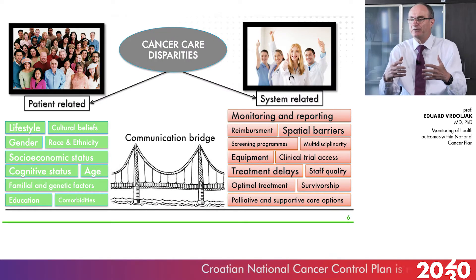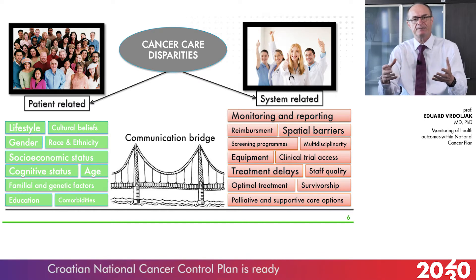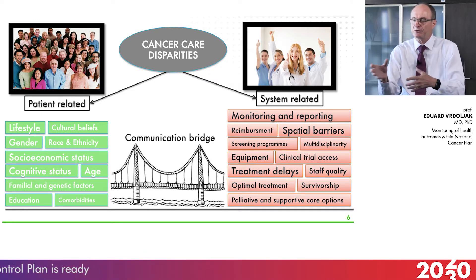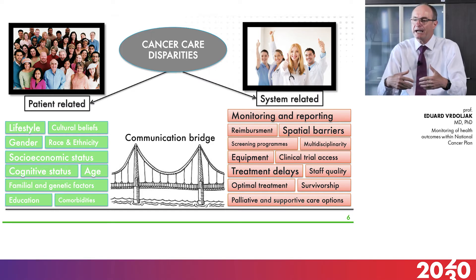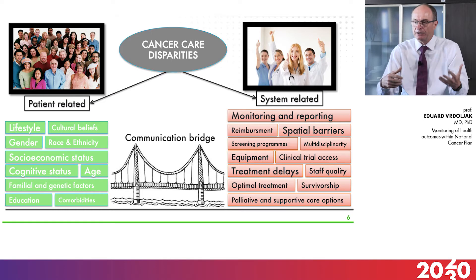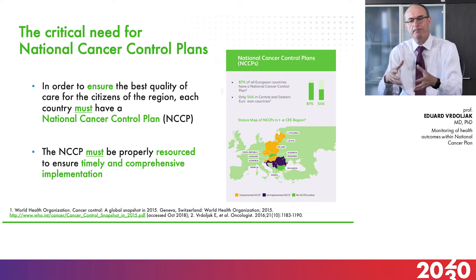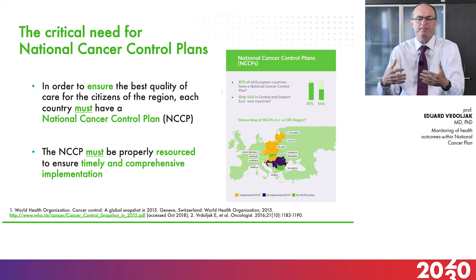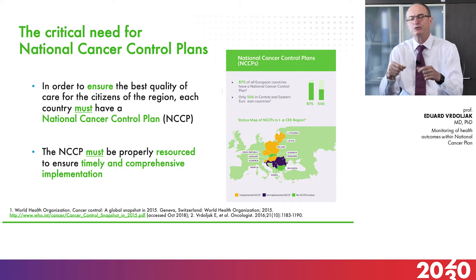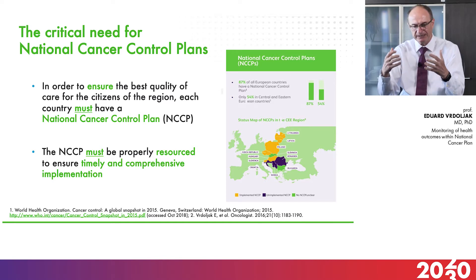To conclude this introductory part, I want to address cancer care disparities. We can define these disparities in two groups: patient-related and system-related. Outcomes can be poor because of patients being of old age, with bad cognitive status, or with low socioeconomic status. On the other side, there are system reasons why some patients will have worse outcomes than others. To improve outcomes, we develop national cancer plans — every country must have a plan to address their specific issues. The national cancer control plan must be properly resourced to ensure timely and comprehensive implementation, and that is the problem many are facing.